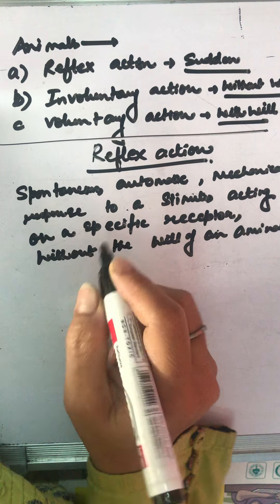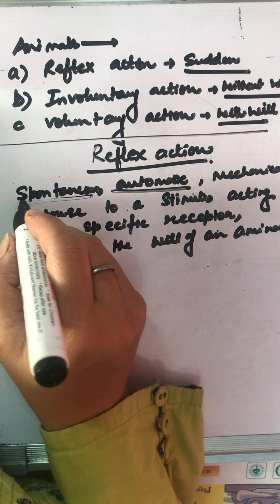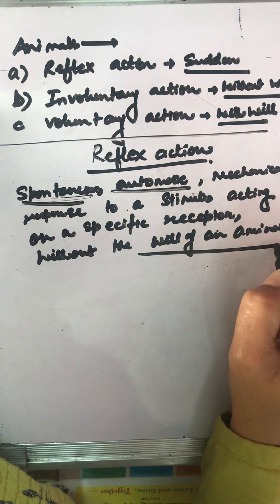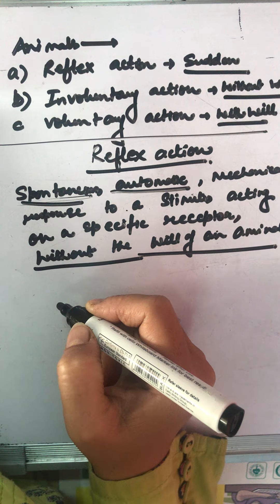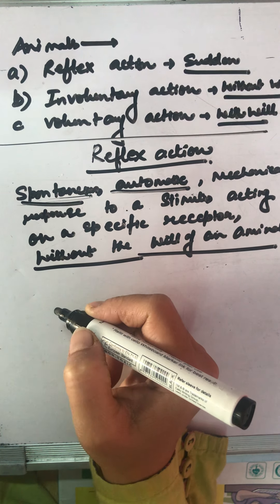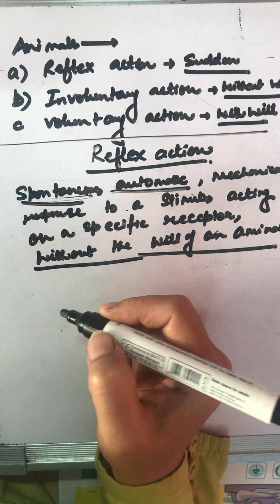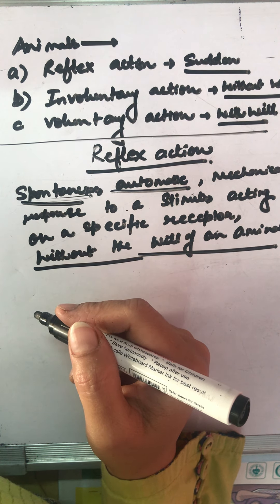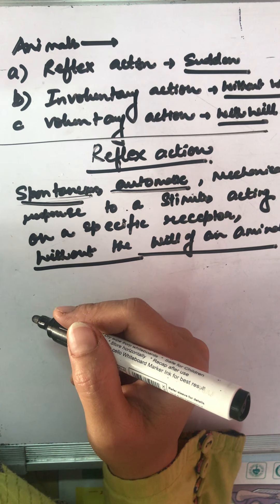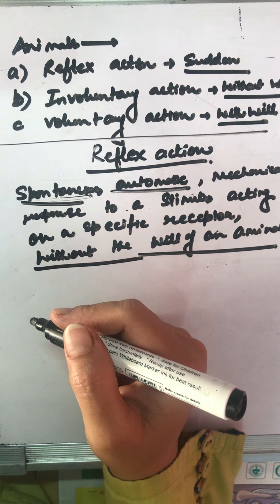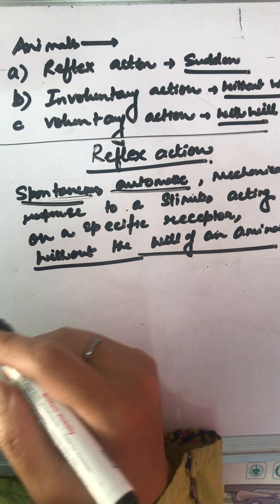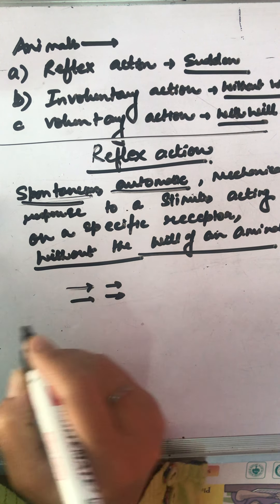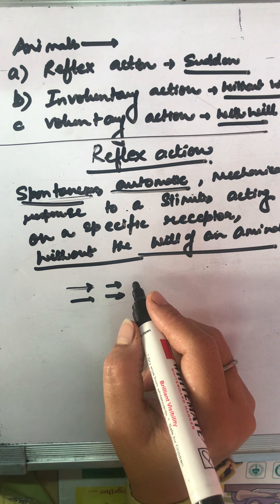What is mainly important here is spontaneous, automatic, and sudden reaction which occurs without the will of an organism. Why does this take a spontaneous and sudden reaction? Why is it not involving the thinking process of a human being? There is a very simple answer. Whenever we think, we are sending nerves across which are going for the thinking process.